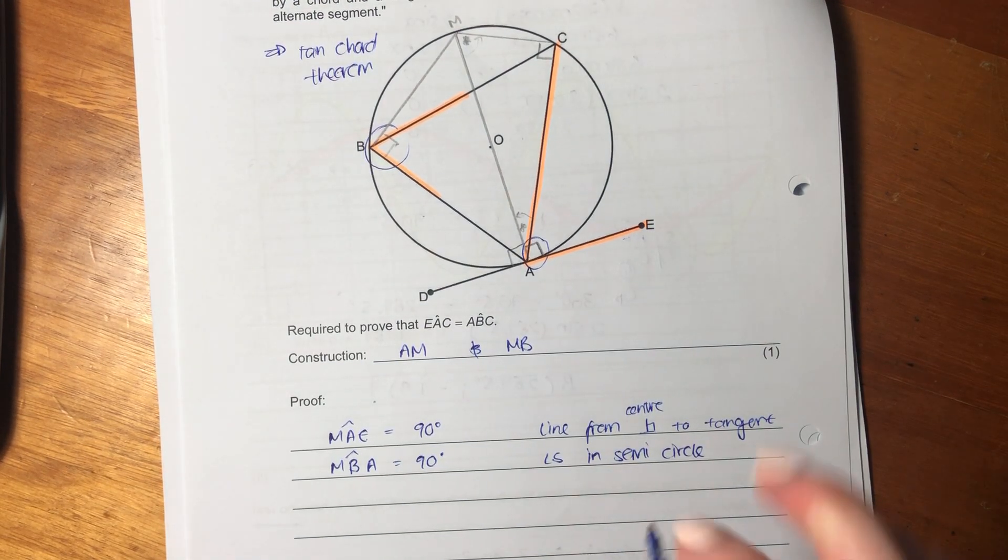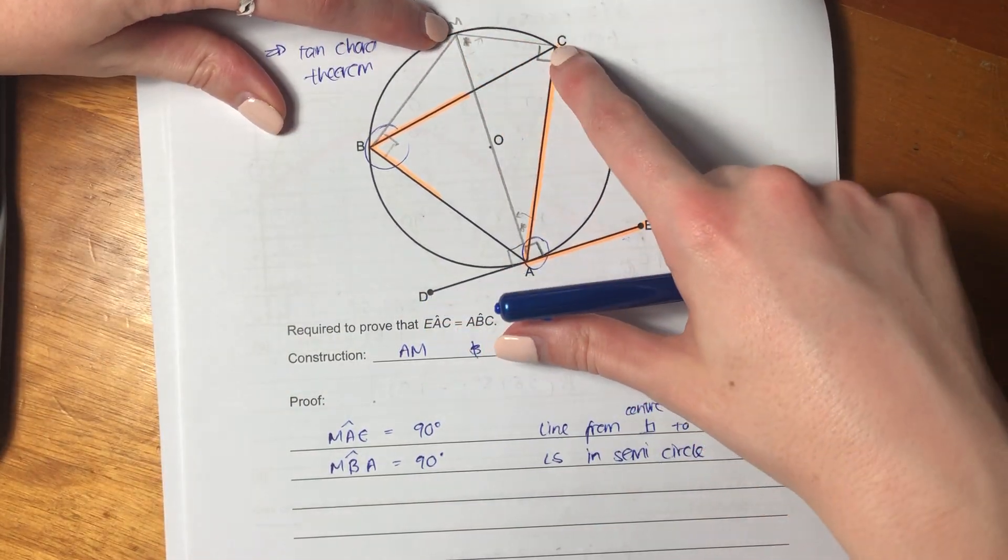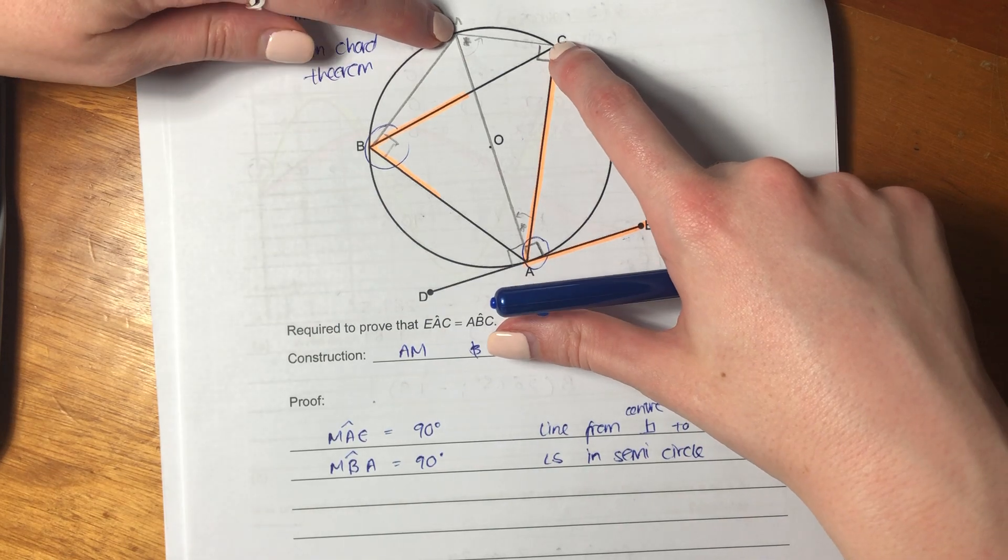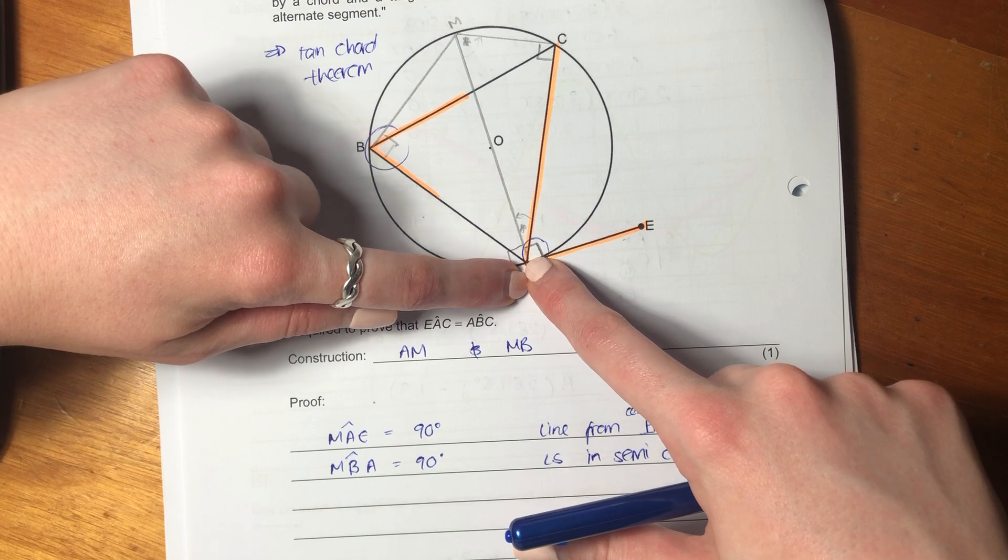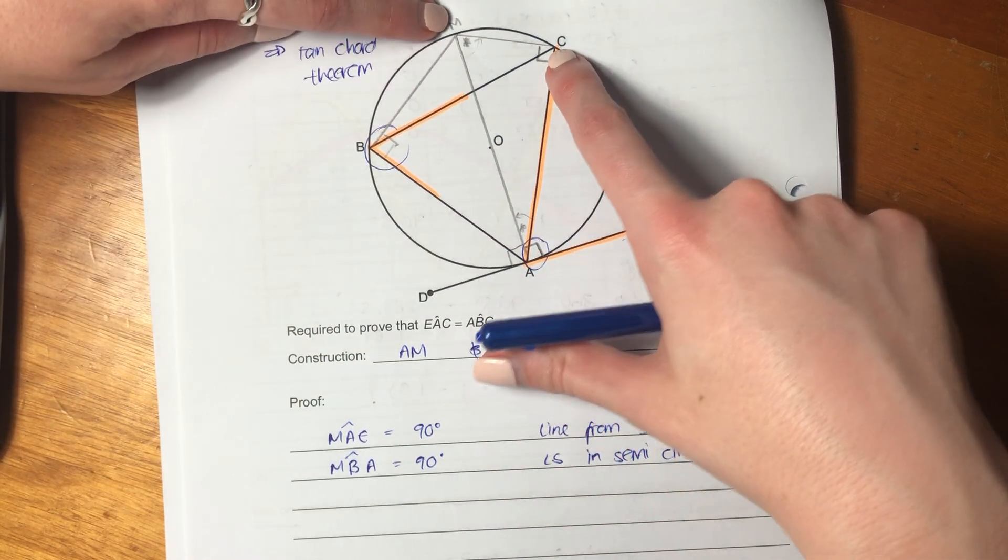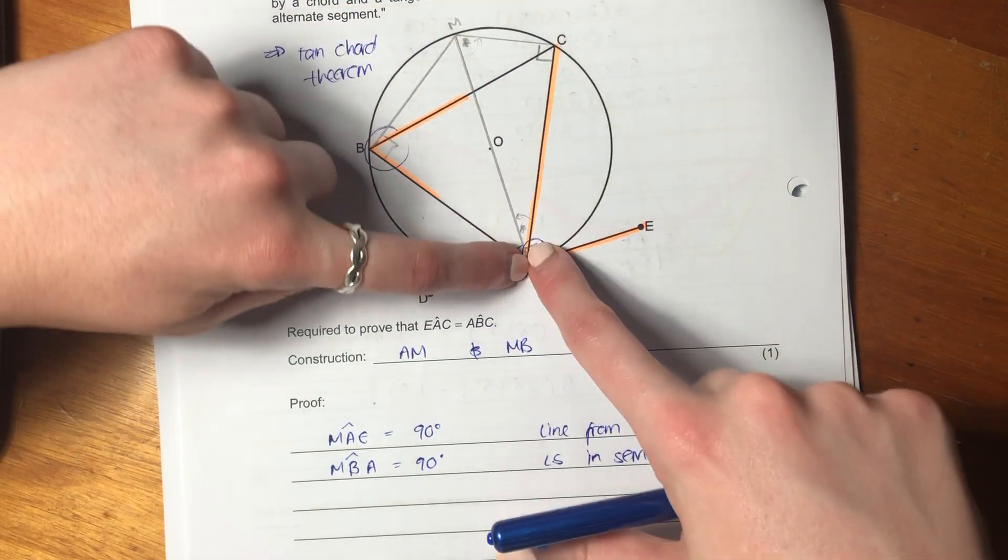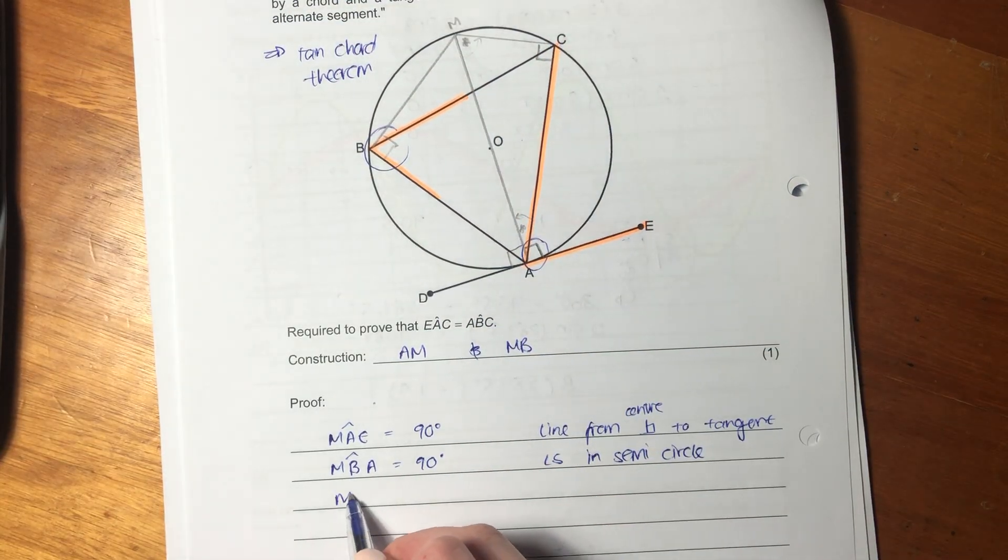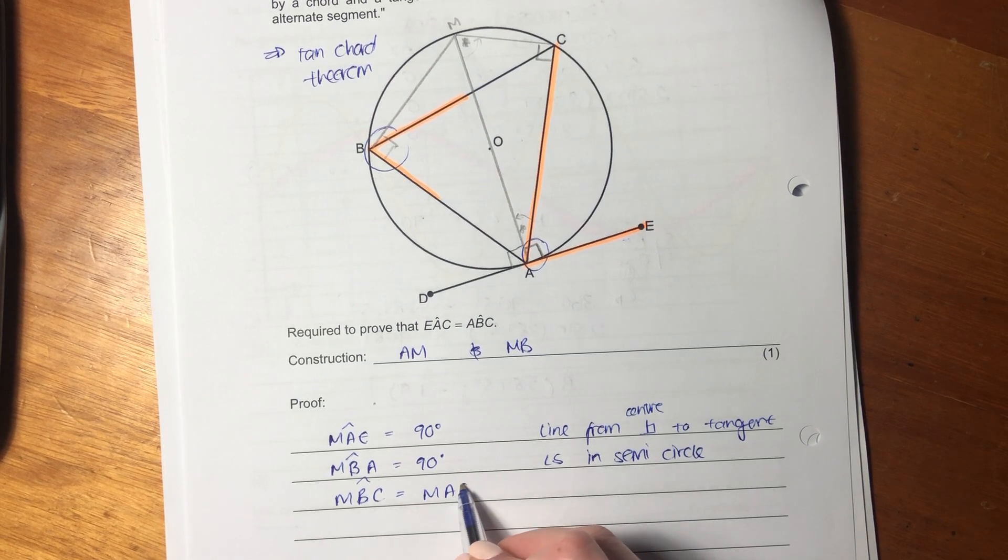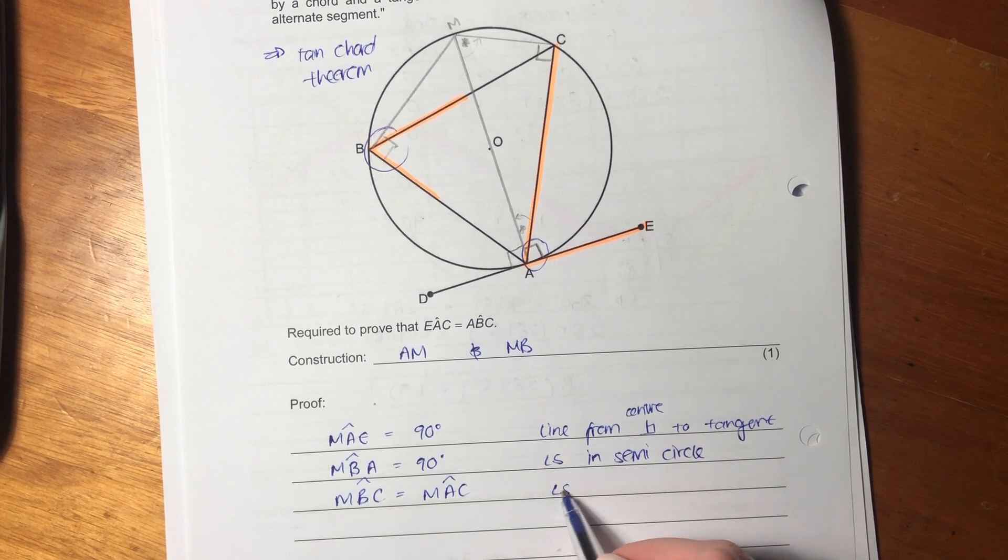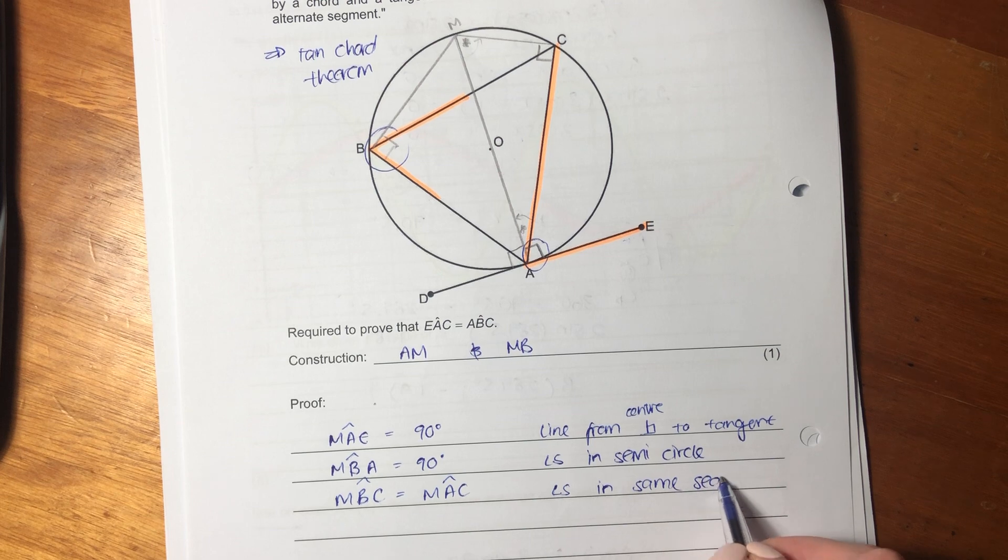But now what we also know is we know that angle there equals the same as that angle there, and that's angles in the same segment. So let me draw that to show you one more time. That angle there is the same as that angle there. So I'm going to say MBC equals MAC because of angles in the same segment.